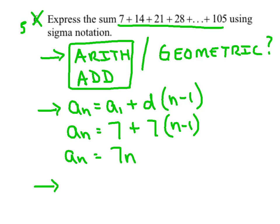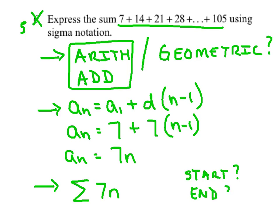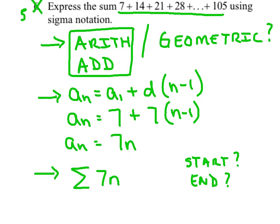The third step is to create the sigma notation. Throw your nth term right in there. The questions remaining are: what should the starting value be and what should the ending value be? Whatever you plug in for n has to produce the first term of seven, so I'll start with n equals one, since seven times one is seven. For the ending value, we need to produce 105. Through trial and error, seven times 15 produces 105, so we end at n equals 15. Now you've got a great answer in sigma notation.